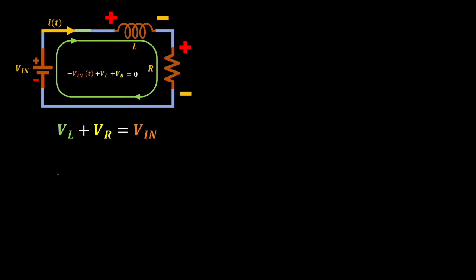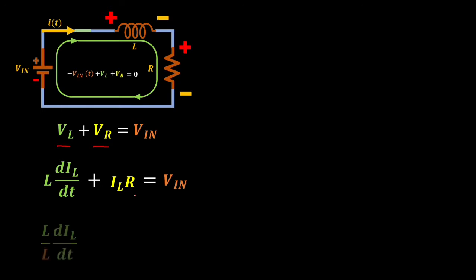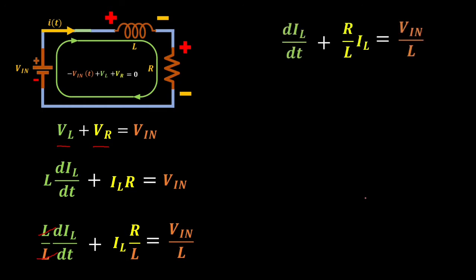Then we will use the inductor voltage formula, L·dI/dt, and substitute it for V_L. For the voltage across the resistor, it is simply our current multiplied by the resistor value, equal to VIN. Next, we divide both sides of the equation by L to cancel the L in front of dI/dt. By doing this, we end up with the standard form of the first-order linear differential equation.